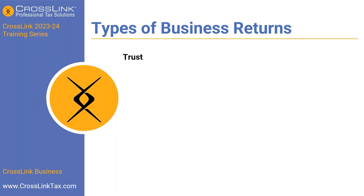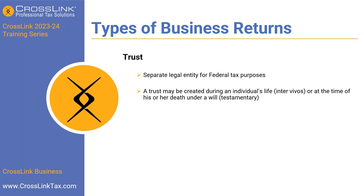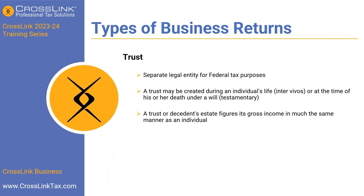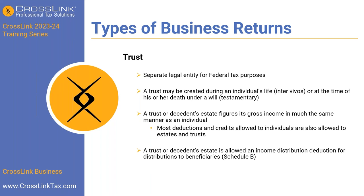The next type of business is a trust — a separate legal entity for federal tax purposes. A trust may be created during an individual's life (inter vivos) or at the time of death under a will (testamentary). A trust or decedent's estate figures its gross income in much the same manner as an individual, and most deductions and credits allowed to individuals are also allowed. A trust is allowed an income distribution deduction for distributions to beneficiaries, done on Schedule B. This is done on Form 1041 and generally must use the calendar year with a due date of April 15th.